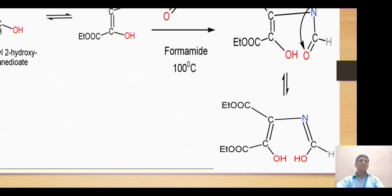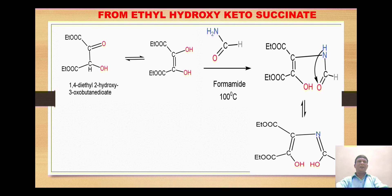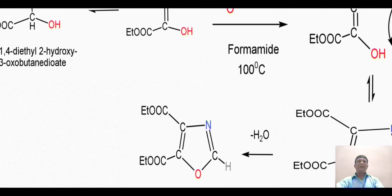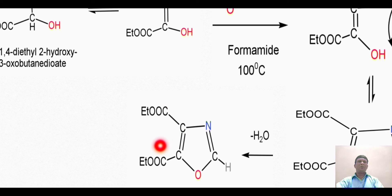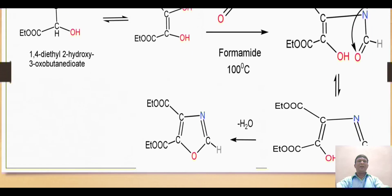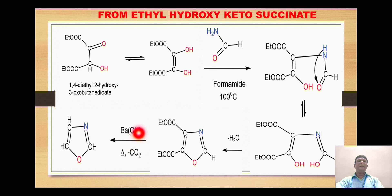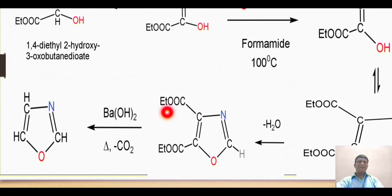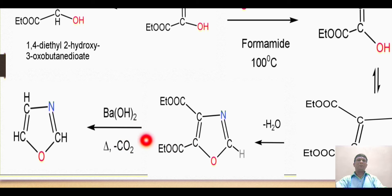Both hydroxyl groups are close to each other and are acidic, so one proton may migrate onto the other hydroxyl group, releasing a water molecule. Cyclization takes place with oxygen at the center, forming a five-membered heterocyclic ring with two ethoxycarbonyl groups at positions 4 and 5. When this derivative is heated with barium hydroxide, the ester groups are converted to the corresponding carboxylic acids — the ethoxy groups are removed as ethanol — generating COOH groups.